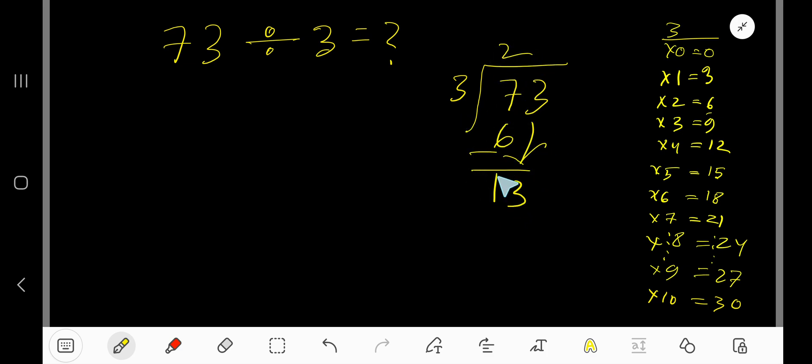Bring down this 3. 3 goes into 13 how many times? 5 times 15 which is greater, so 4 times. 4 times 3 is 12, subtract to get 1.